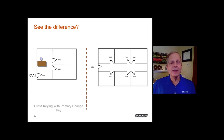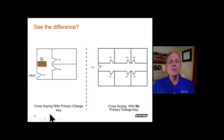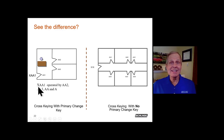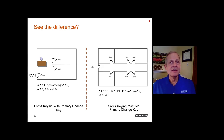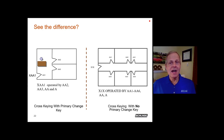To summarize the difference: cross-keying with a primary change key uses an X in front of the key symbol — such as XAA1 — followed by 'operated by.' Cross-keying with no primary change key uses the designation X1X or X2X — an X in front of and behind the number — then specifies all keys that will operate. In both cases, you must list all operating keys explicitly; master keys and grand masters do not automatically operate.